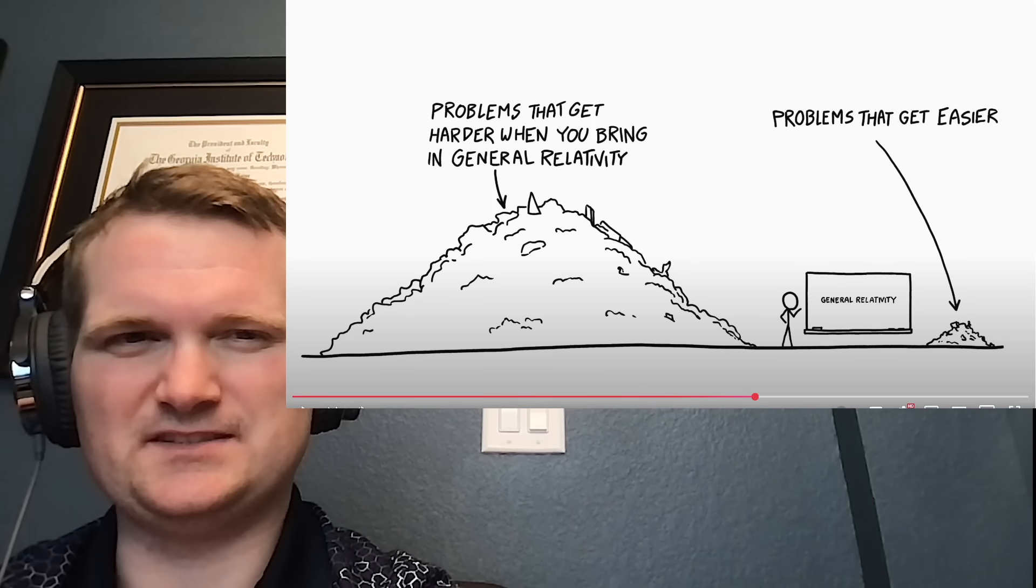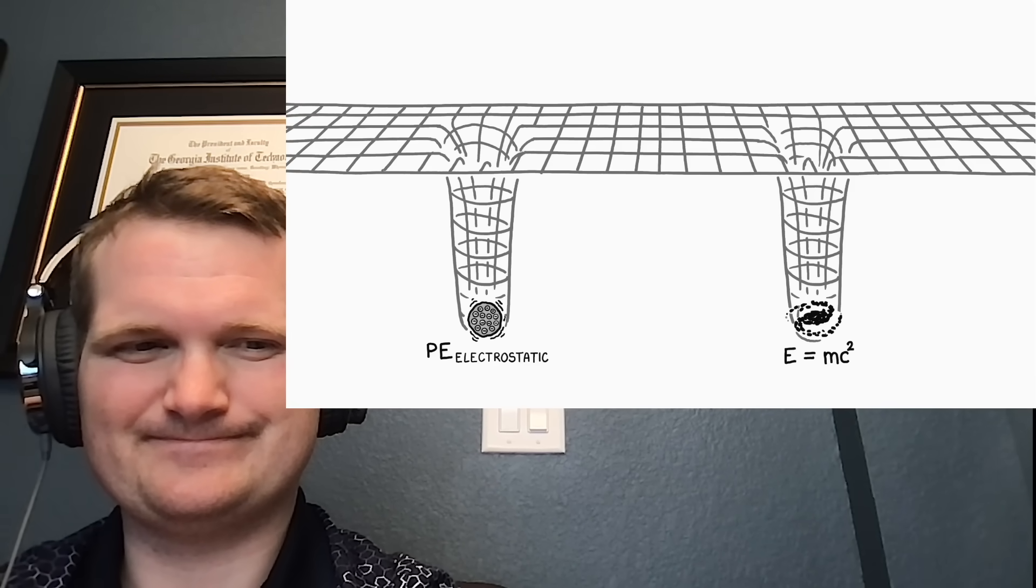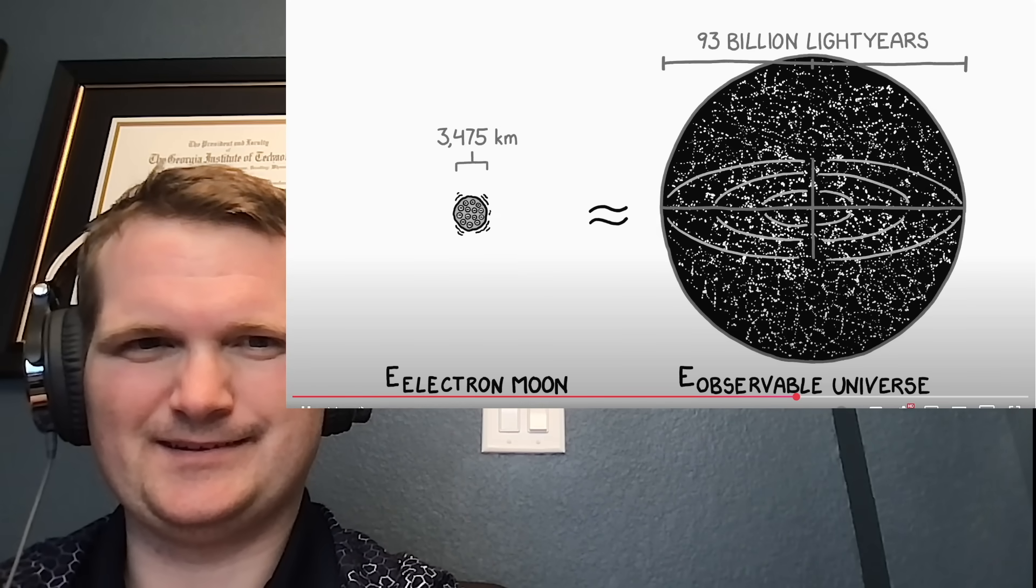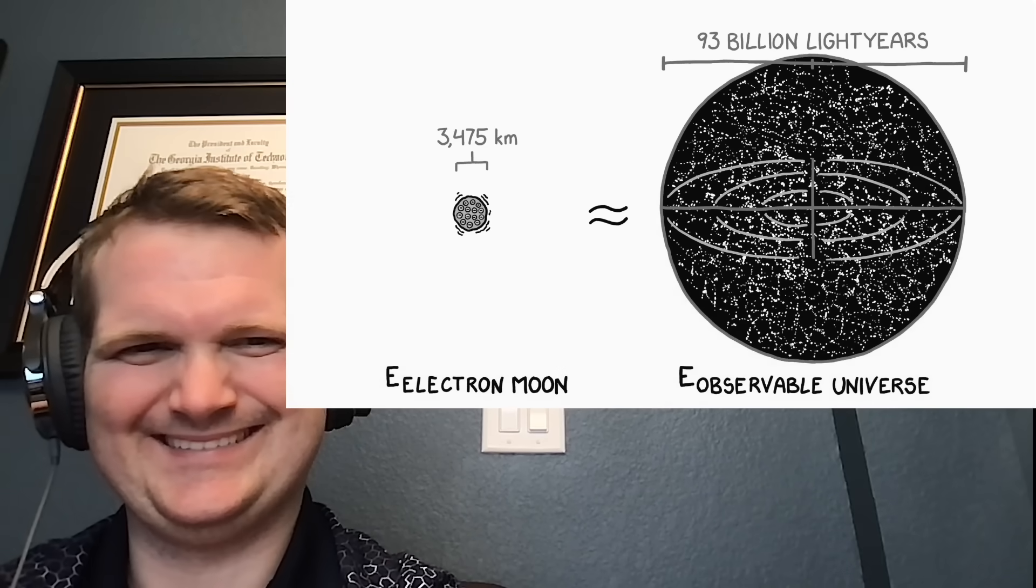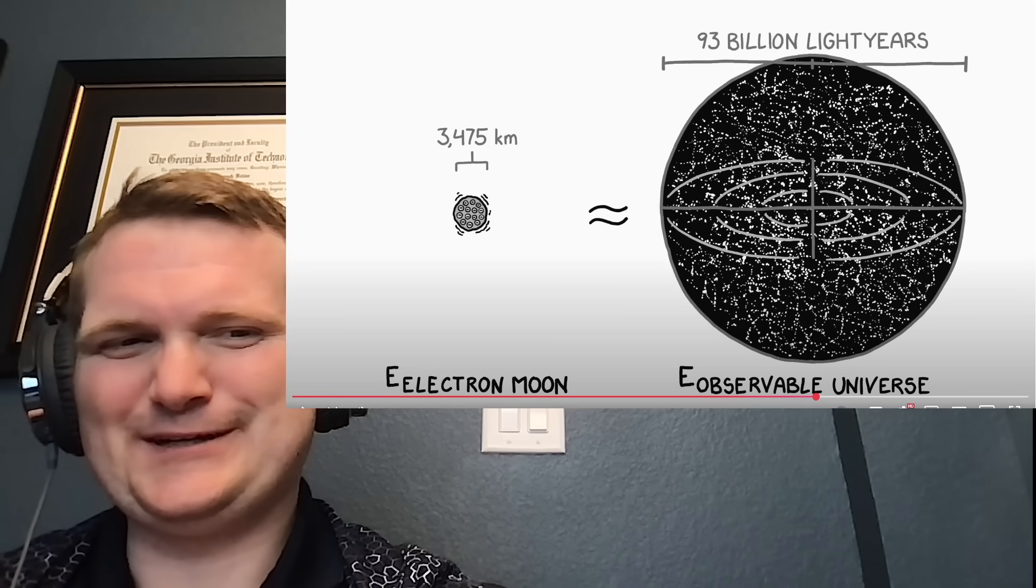There is a huge amount of potential energy in this scenario, the energy that we imagine to blast all those electrons apart. That energy warps space and time just like mass does. The amount of energy in our electron moon, it turns out, is about equal to the total mass and energy of the entire observable universe. Yeah, that can't be good for the universe.